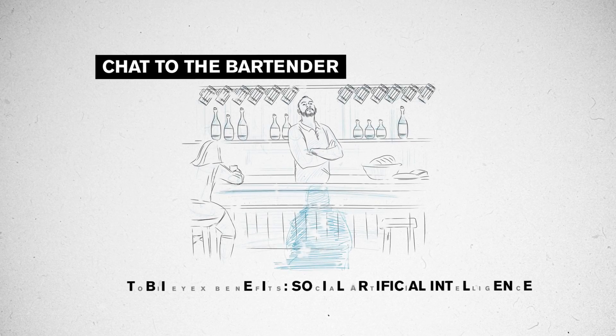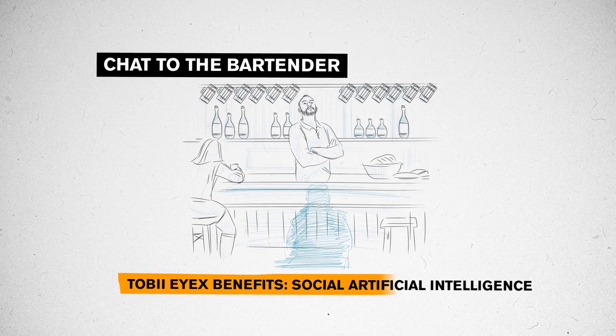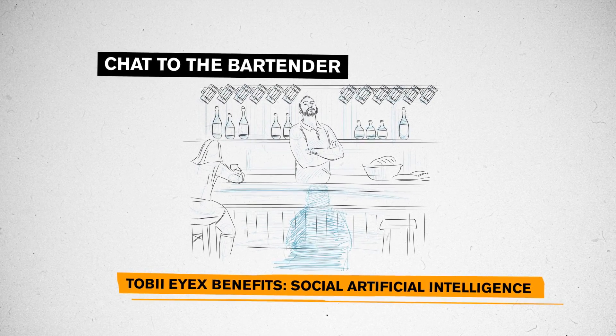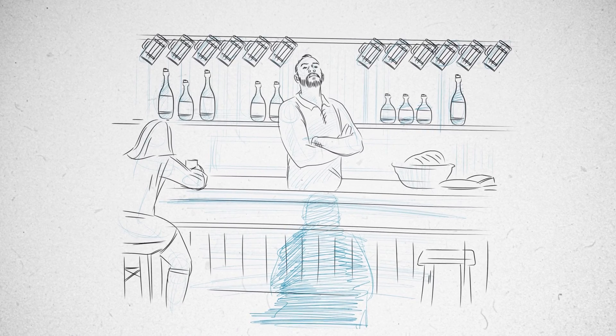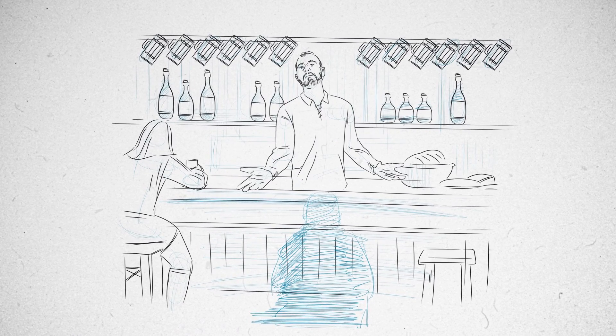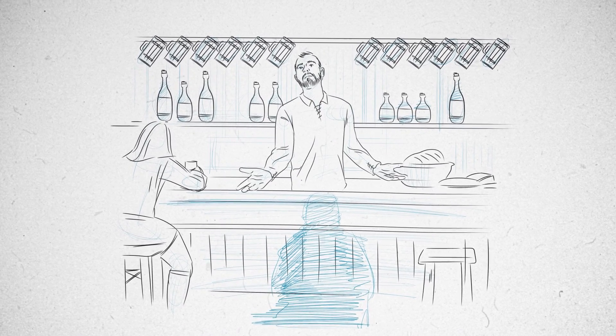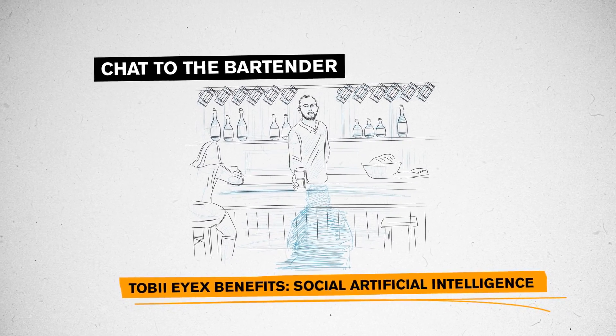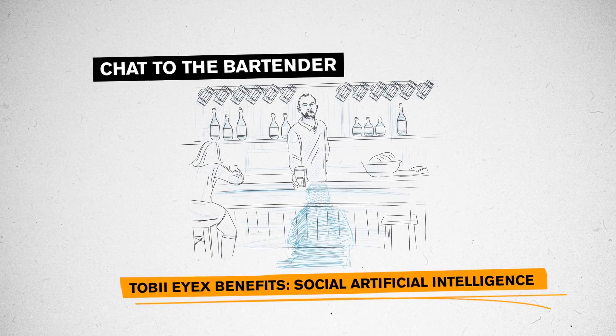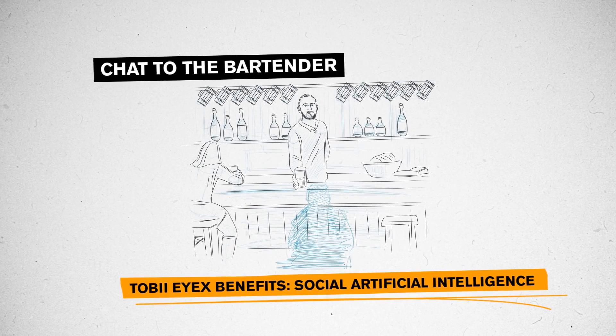Chat to the Bartender: Walk into the bar and look at the bartender. He nods at you and asks if you'd like the usual. No need to move your character and click X to hear what he has to say anymore.